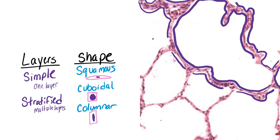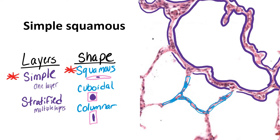This slide is mostly open space, and lining that open space is a single layer, so it is simple. And although you cannot see the shape of the cells clearly, they are definitely not cubes, definitely not columns — they are those flat little pancakes, which makes this simple squamous.